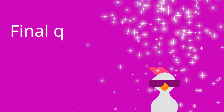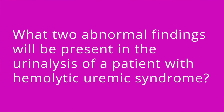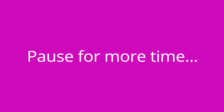Question number three: what two abnormal findings will be present in the urinalysis of a patient with hemolytic uremic syndrome? The answer is the urinalysis will show hematuria and proteinuria.